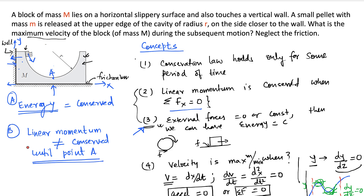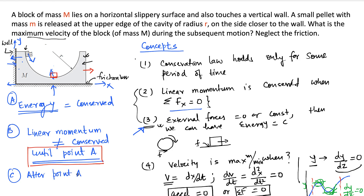Once the pellet reaches point A and begins to climb up the other side, it applies a force pushing the block in the positive x direction. Since there is no wall on this side, the block is free to move. So after point A, linear momentum is conserved. These two observations — energy always conserved, but linear momentum only conserved after point A — are so important for solving this problem.